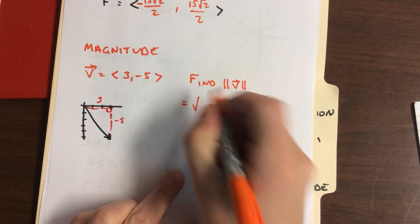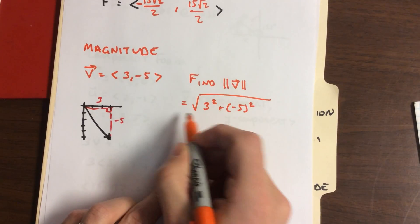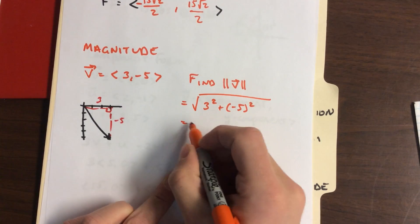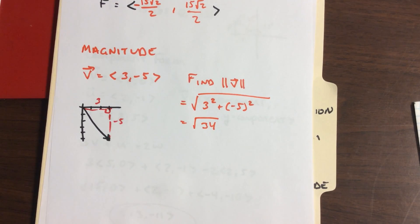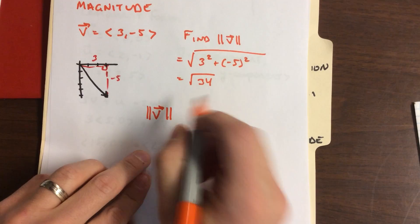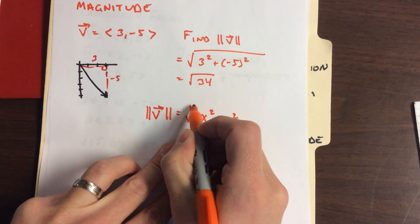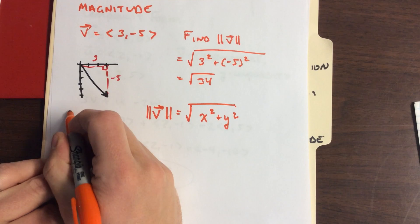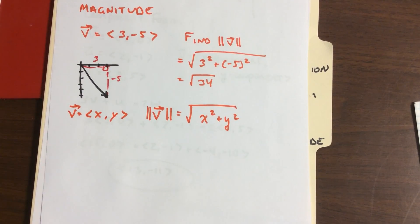Pythagorean Theorem, it keeps coming back. We've got magnitude is the square root of 3 squared plus negative 5 squared. 9 plus 25, we've got the square root of 34. So magnitude when we have a vector is always just going to be square root of x squared plus y squared. When we have this in component form, magnitude is always the square root of x squared plus y squared.